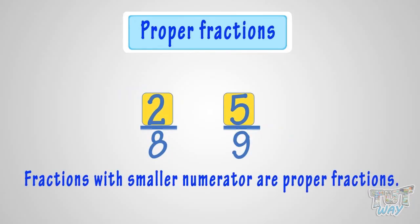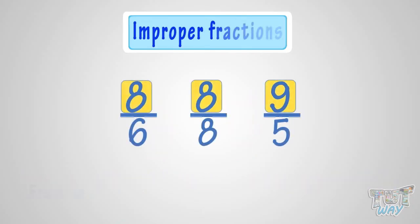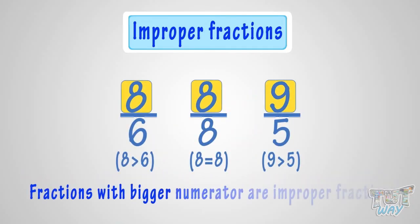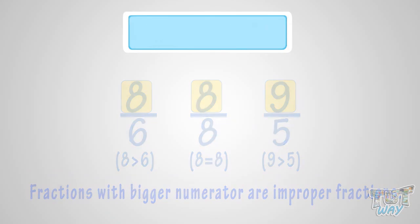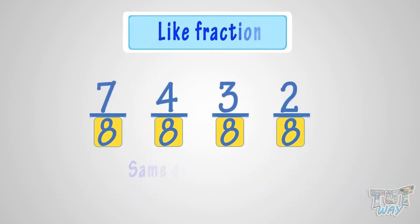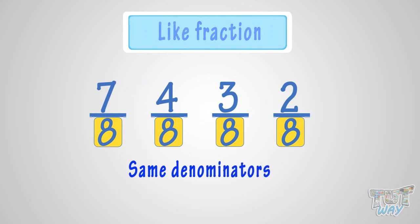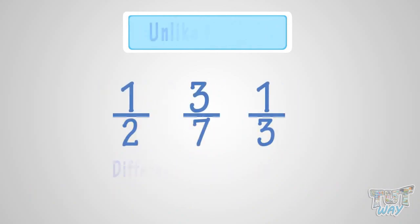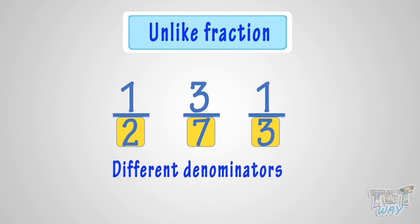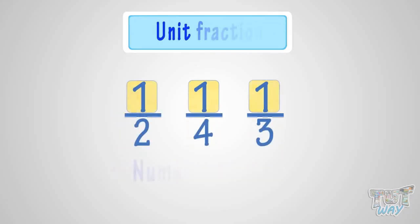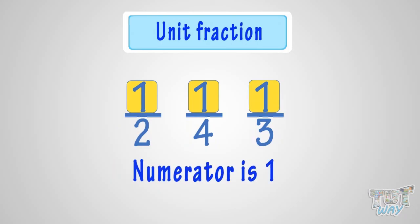Fractions with a smaller numerator are called proper fractions. Fractions with an equal or bigger numerator are called improper fractions. Fractions with the same denominators are called like fractions. Fractions with different denominators are called unlike fractions. Fractions with numerator one are called unit fractions.